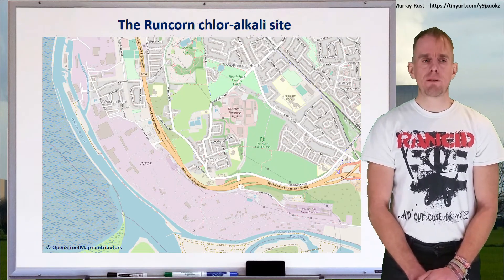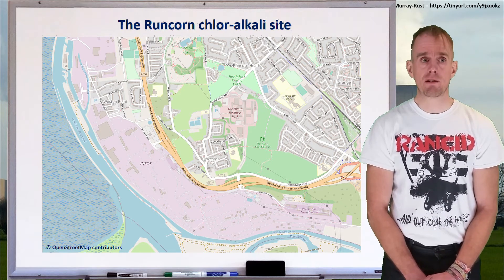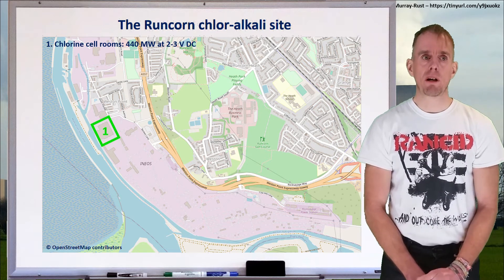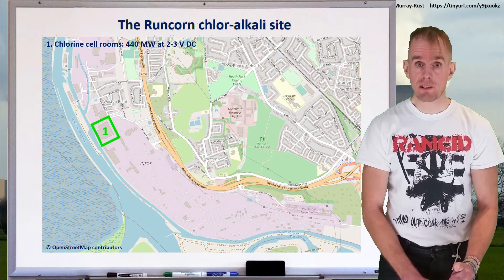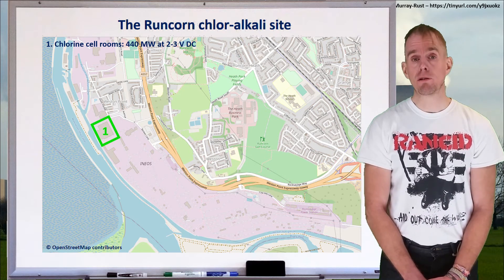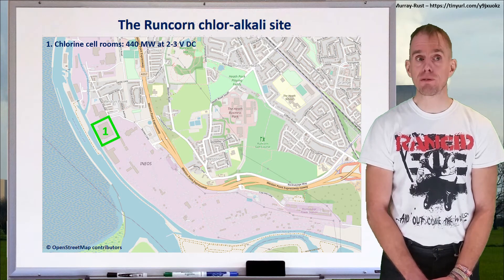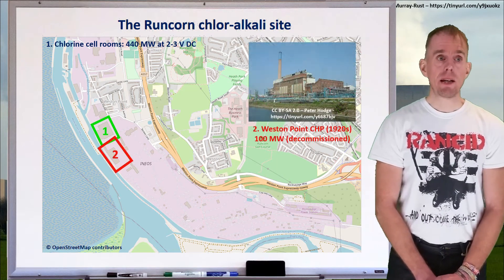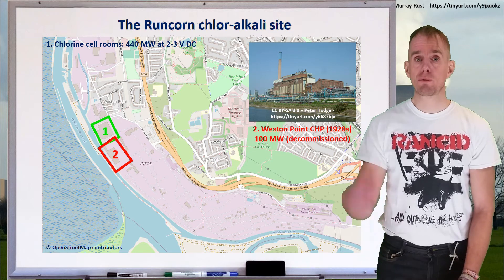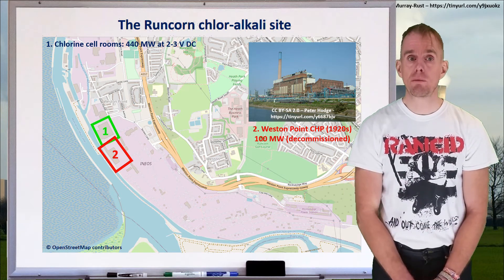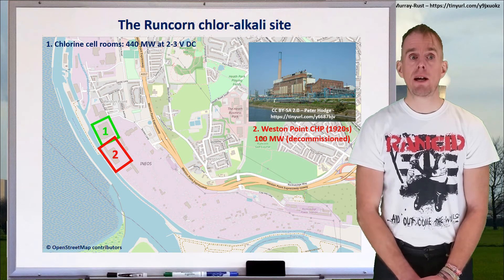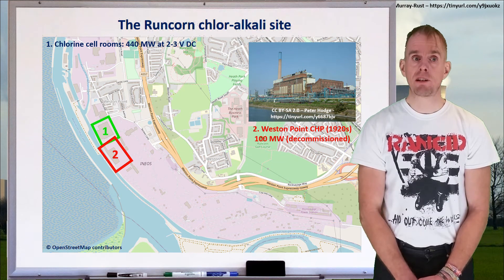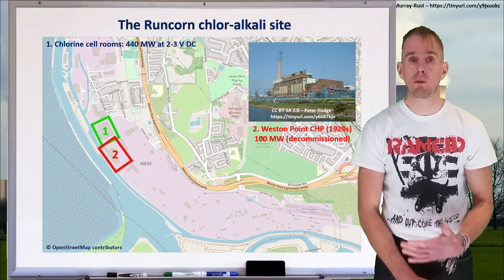The chlorine cell rooms at the northern end of the site require about 440 megawatts, running off DC at around two to three volts — corresponding to many thousands of amps. Right next door, the old Western Point power station was commissioned in the 1920s as a coal-fired combined heat and power plant supplying both electricity and steam to the site, with a capacity of about 100 megawatts. That power plant has since been decommissioned.